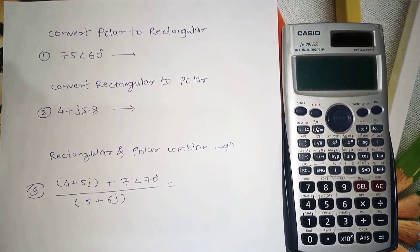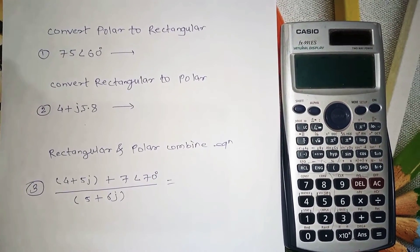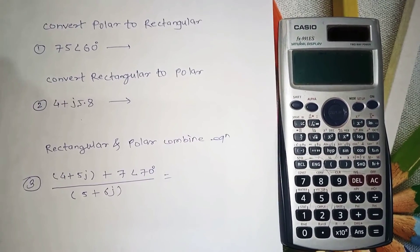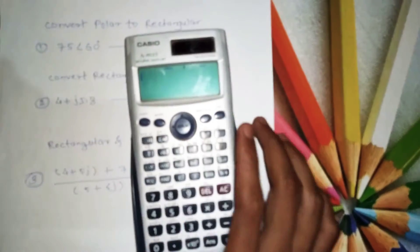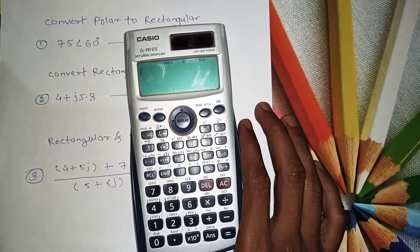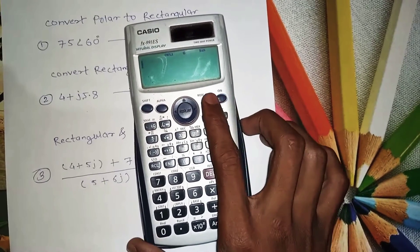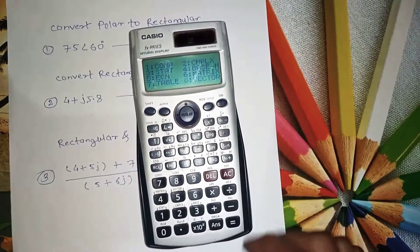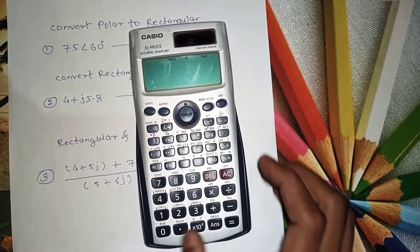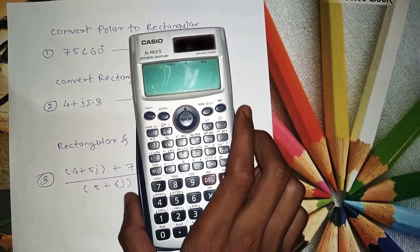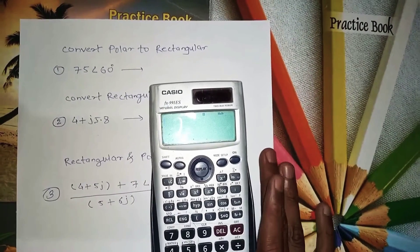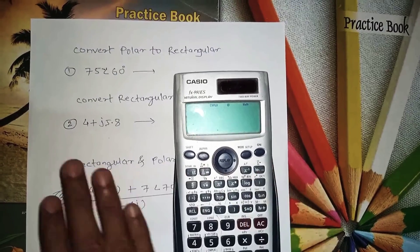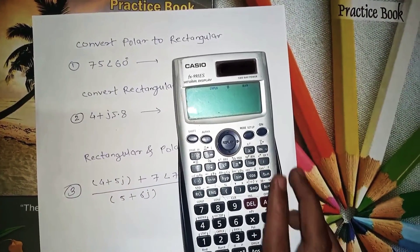Hi friends, I want to tell you how to convert values from polar to rectangular or rectangular to polar. First, put your calculator in complex mode — press the mode button, here it is 2 for complex. Press 2 and your calculator comes into complex mode.